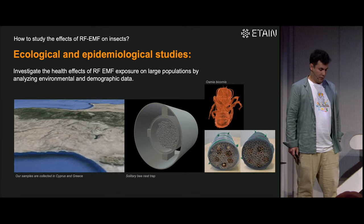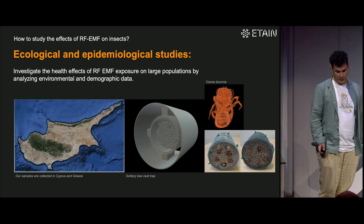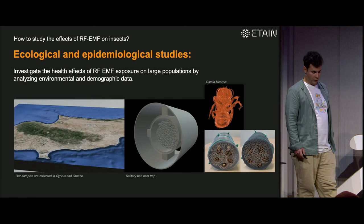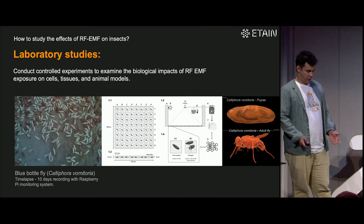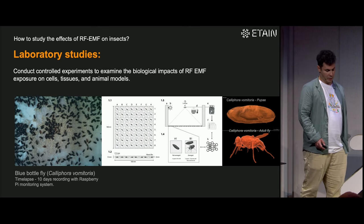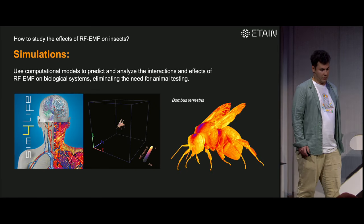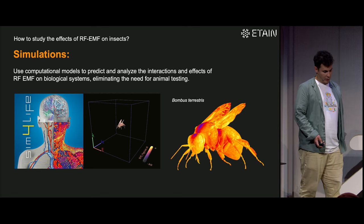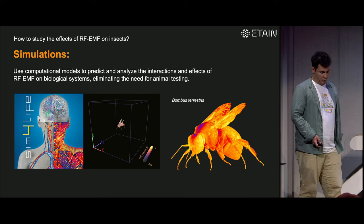How do we make these kinds of studies? We have groups doing ecological studies, comparing areas with and without antennas to see if there are differences in population — for example, we have study sites in Cyprus and Greece. We also do laboratory work, such as putting flies in the larval stage and checking whether they have higher mortality after exposure to waves compared to control groups. We also use software to make simulations, which allows us to model scenarios that don't yet exist in reality and predict some effects.